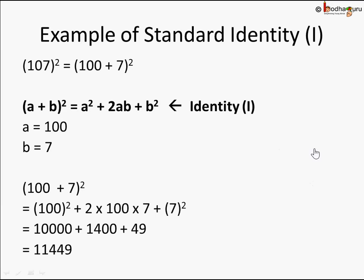So 107² = 10000 + 1400 + 49 = 11449. This multiplication was much easier and you can do it in your mind or on paper very easily. This is useful for cases like 109², 103², or even 509² — for example, 500² = 250000, very simple.